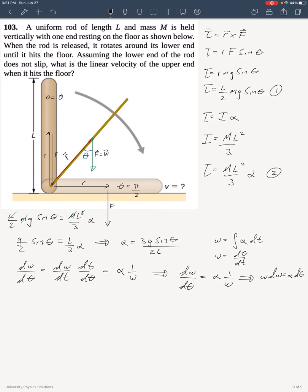Which is great, because I can integrate alpha with respect to theta, and that integration will give me an omega. This means that the integral of omega d omega has to be equal to the integration of alpha d theta.